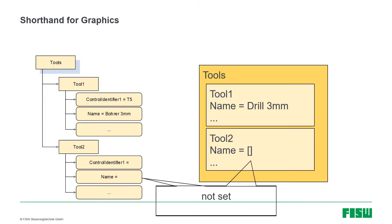Going on, I will not use the OPC graphics anymore because they take up a lot of space. I will shorten them to the graphics you can see on the right-hand side of this slide. The tools list is a bigger box containing each individual tool node. Each node is one rectangular box with the browser name written within and the component name written below it. The value for the component name is written after an equal sign, and if the value is not set it is indicated with brackets.